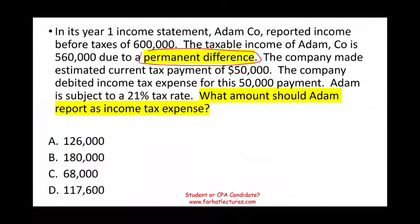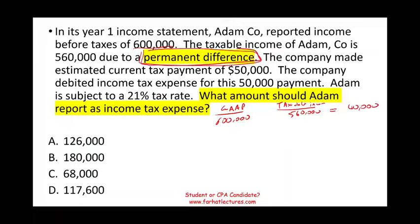Let's take a look at the first scenario. In its year one income statement, Adam Company reported income before taxes of $600,000 — that's your GAAP income. The taxable income is $560,000, which is how much you have to pay to the IRS. There's a difference of $40,000, and in this first example, the difference is a permanent difference, meaning it's never going to reverse.